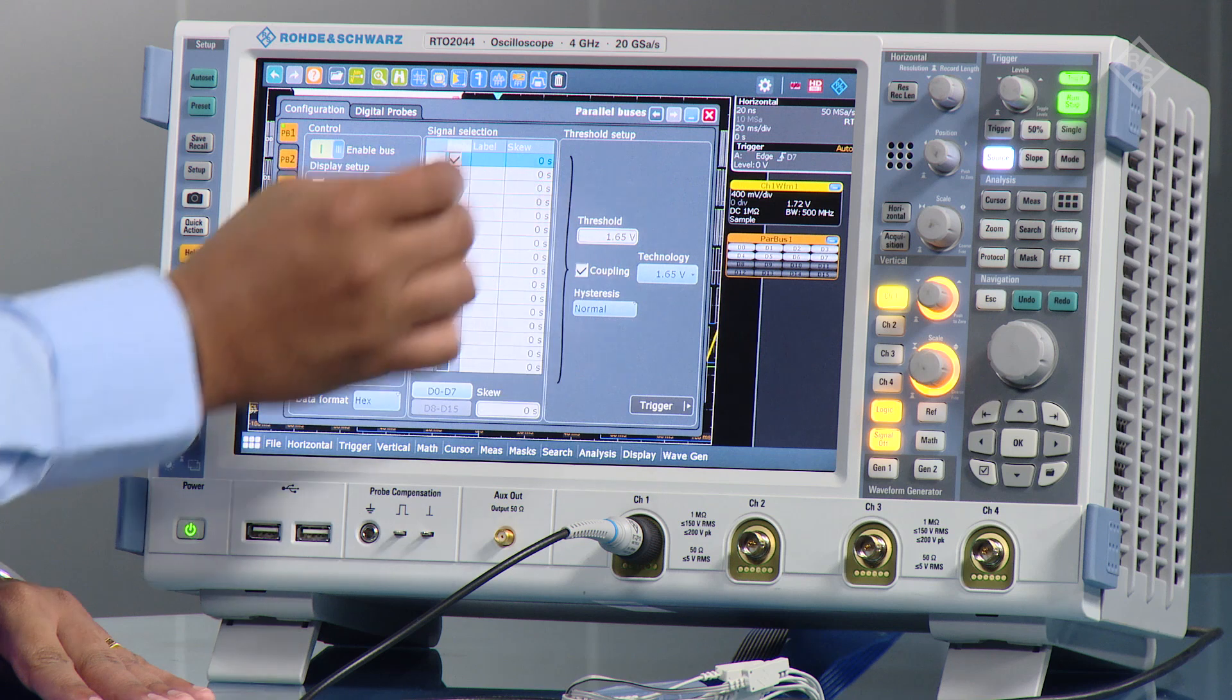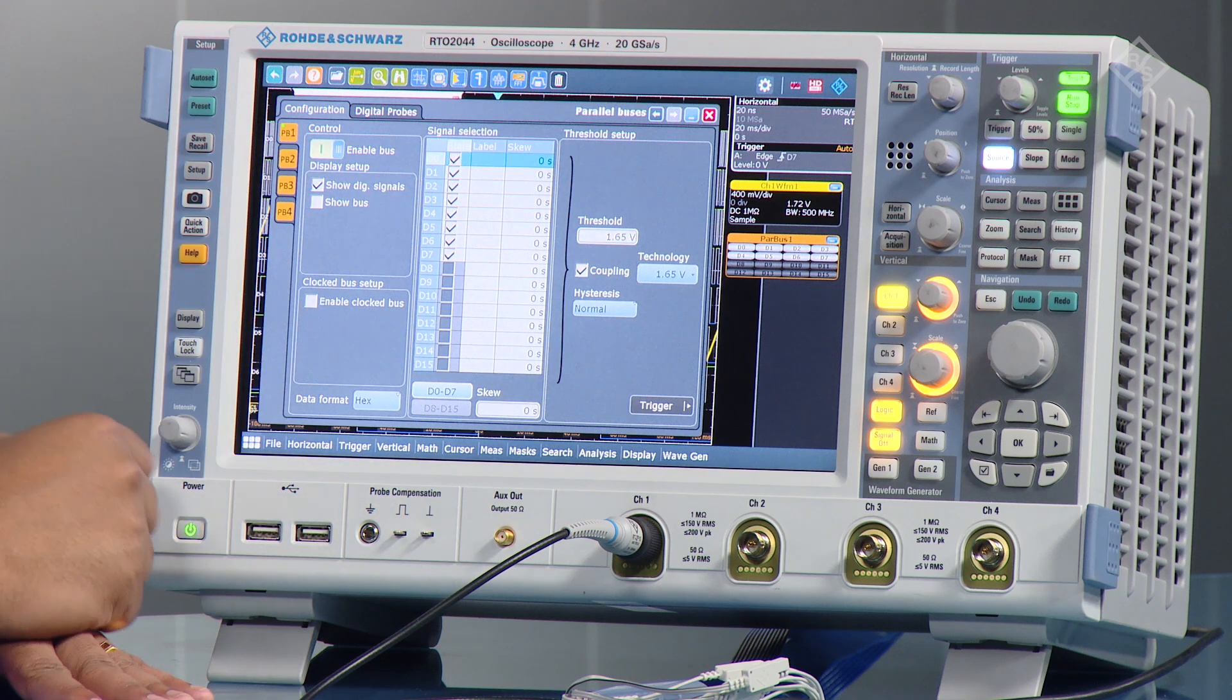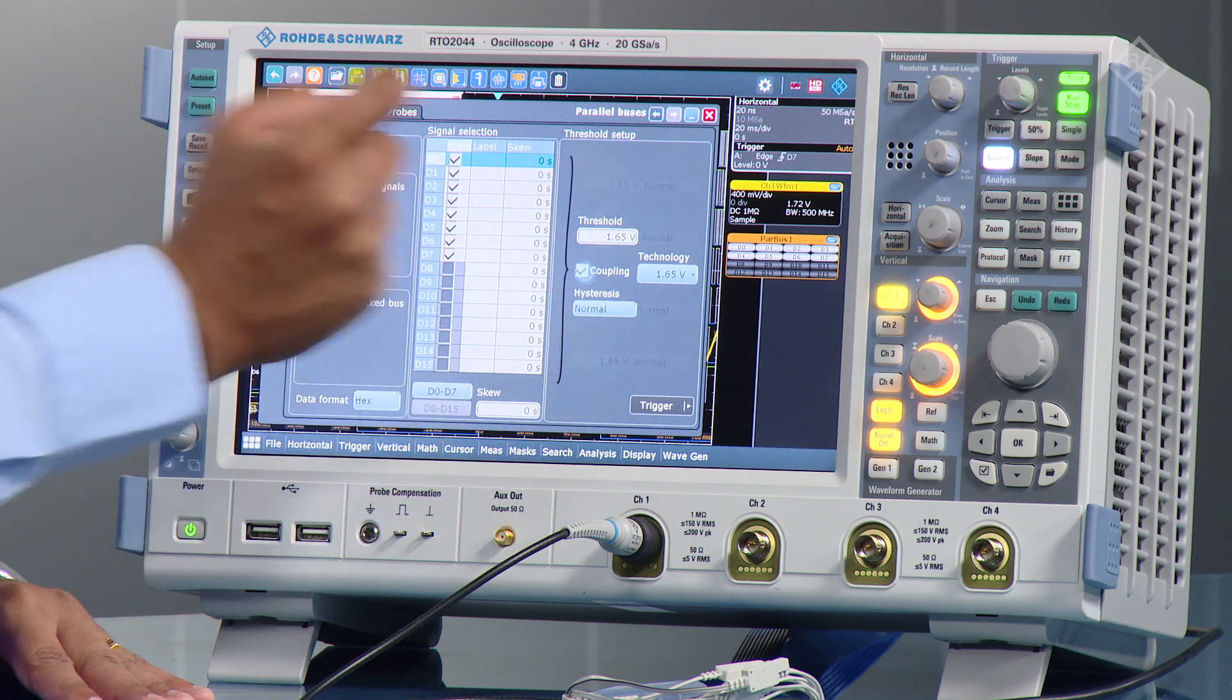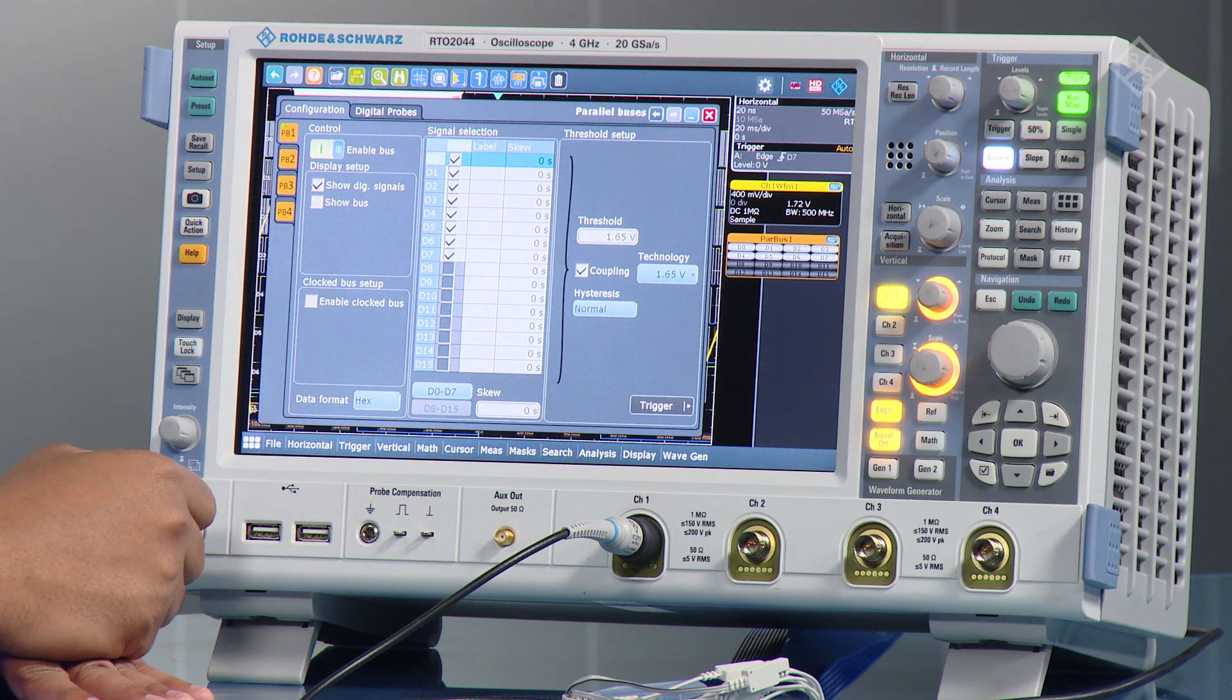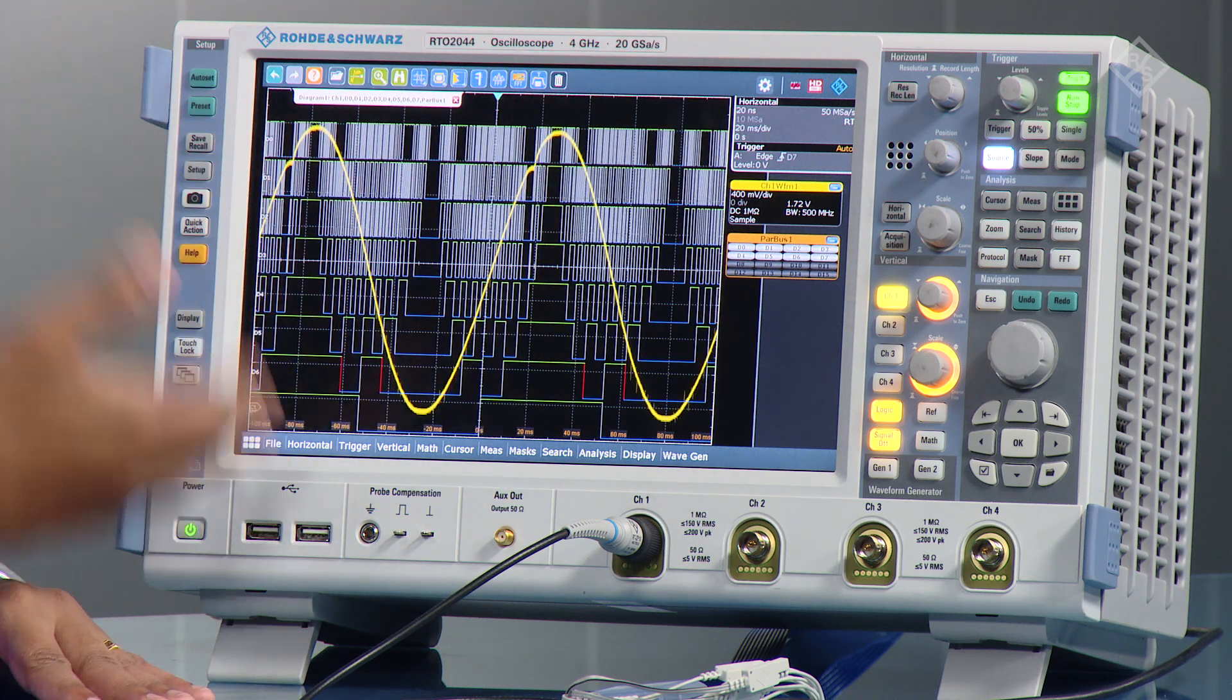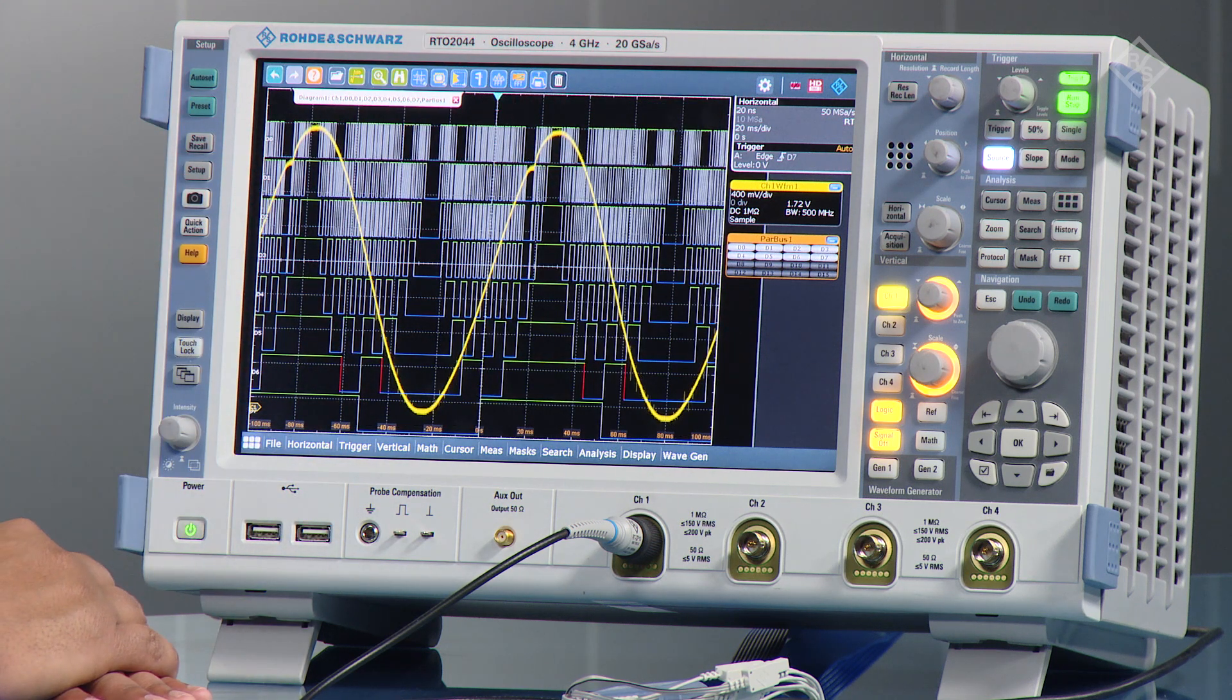Then you can set up thresholds for the whole stream, or in groups of four. I'm going to leave it as one coupled burst. And then when I close that, you see all the digital channels that I've now enabled on the trace.